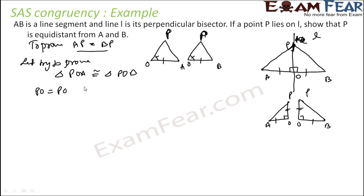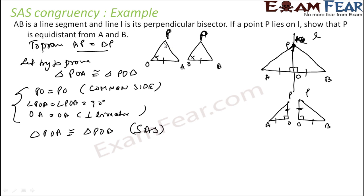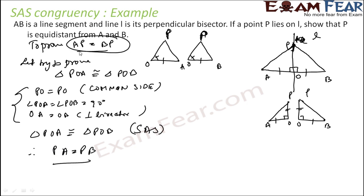In triangle POA and triangle POB: PO equals PO (common side); angle POA equals angle POB, both equal to 90 degrees (since L is a perpendicular bisector); and OA equals OB (given, perpendicular bisector). By SAS — side, angle, side — triangle POA is congruent to triangle POB. Since they are congruent, PA equals PB. Therefore PA equals PB, which is what we had to prove.